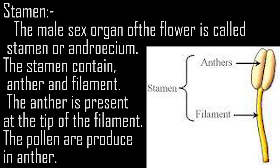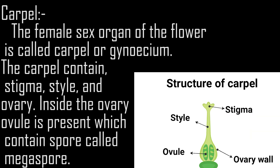Stamen. The male sex organ of the flower is called stamen or androecium. The stamen contains anther and filament. The anther is present at the tip of the filament. The pollen are produced in the anther.